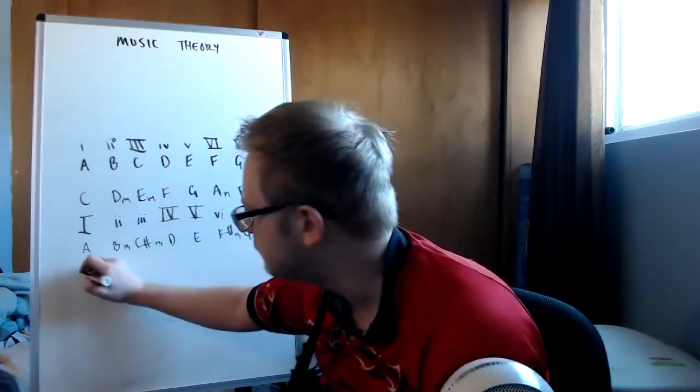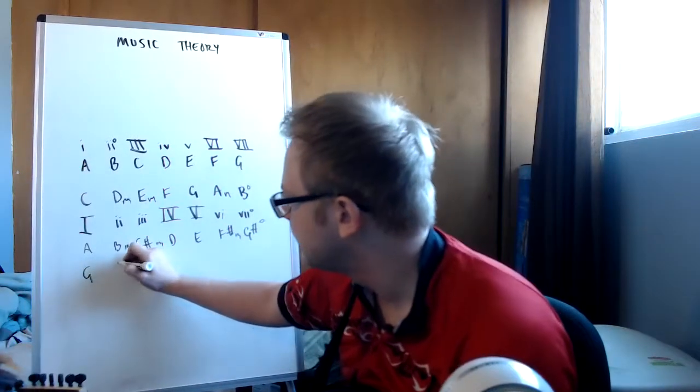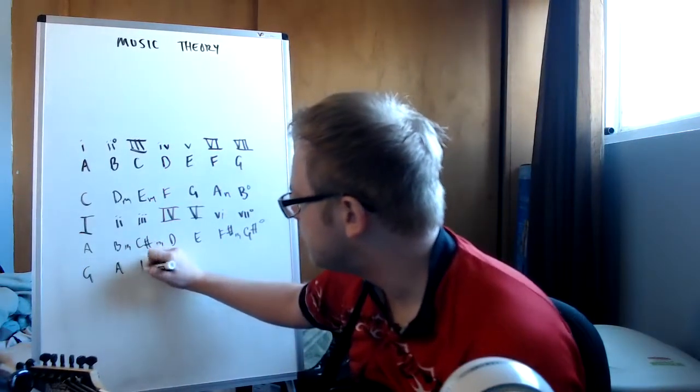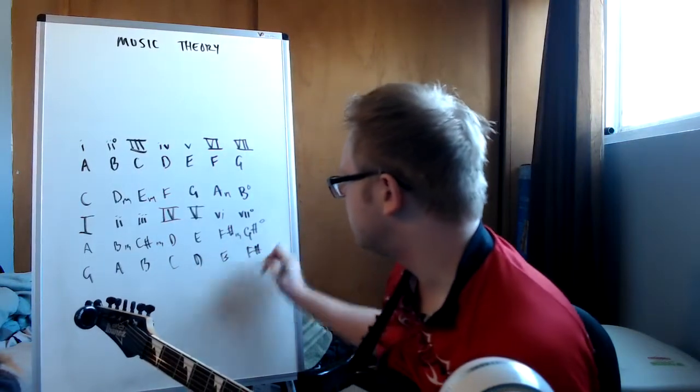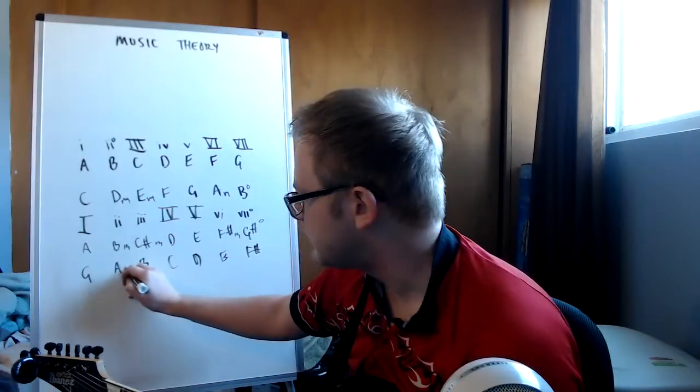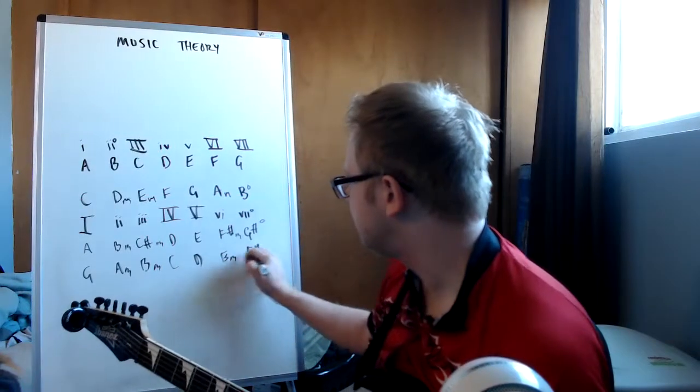So then we head to, maybe I'll try one more. Here's a G. I know that the G, A, B, C, D, E, F sharp here at the end. Let's just apply the minor, the minor, the minor, and the diminished here.